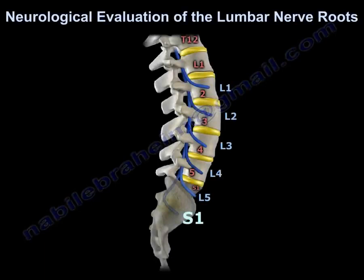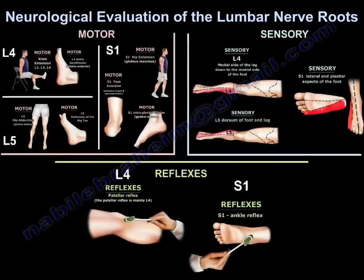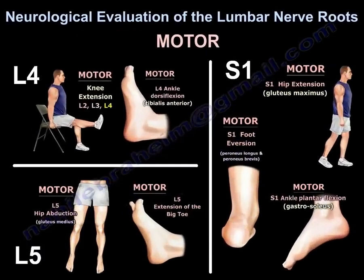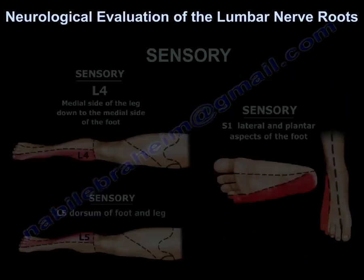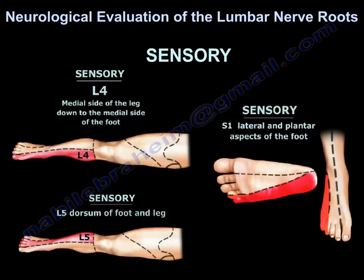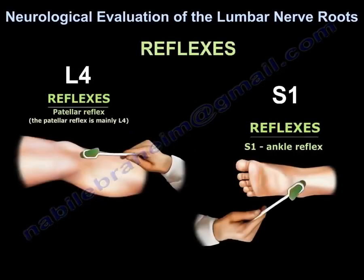There are three important nerve roots: L4, L5, and S1. You can check three things — sensory, motor, and reflexes. For motor: L4 is ankle dorsiflexion; L5 is big toe extension or hip abduction via gluteus medius and minimus; S1 is ankle plantar flexion. For sensation: medial side of the foot is L4; top of the foot is L5; lateral side of the foot is S1. This is how we examine patients. For reflexes: patellar reflex is mainly L4; ankle reflex is S1.